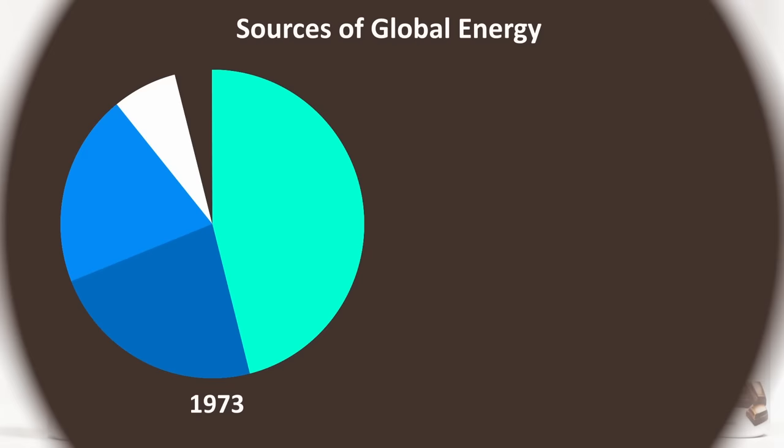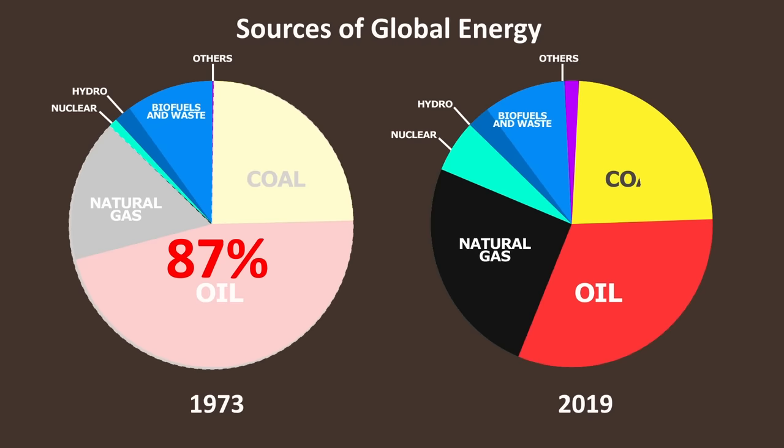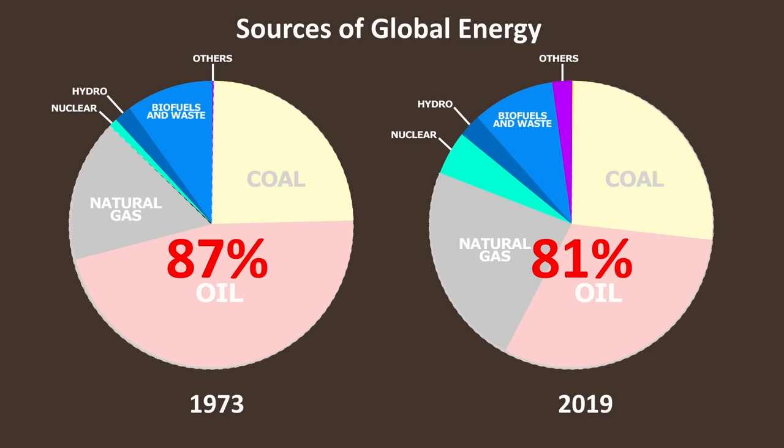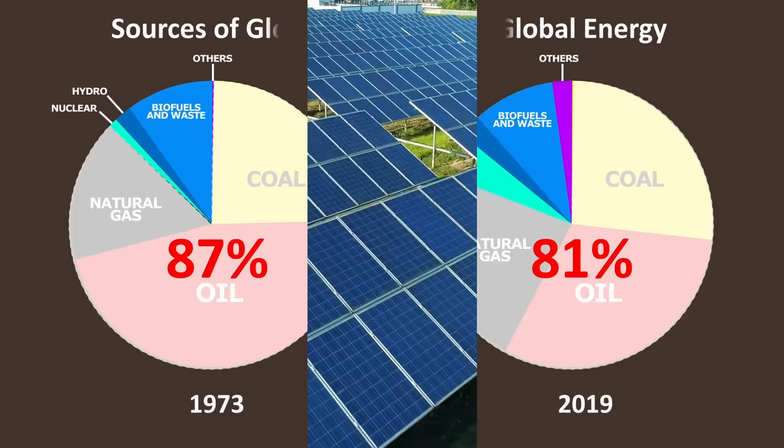In 1973, natural gas, oil, and coal made up 87% of the world's energy supply. By 2019, this number was down to 81%. This reduction is a direct result of the push towards green energy in the last few decades.